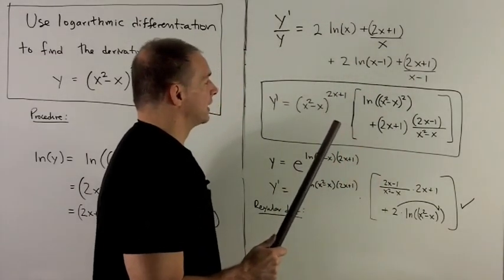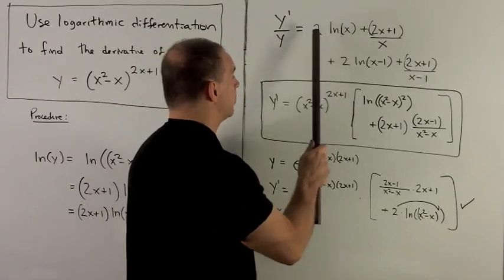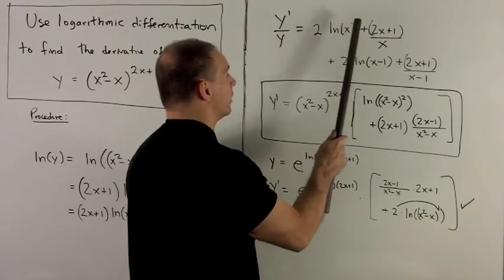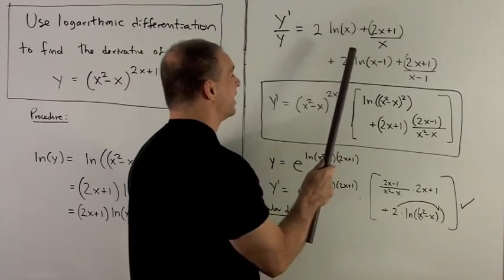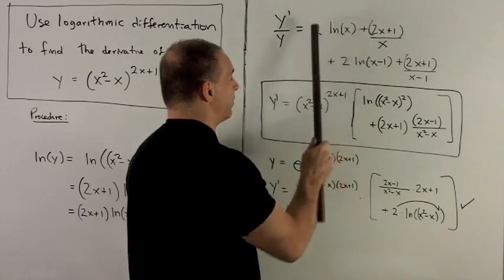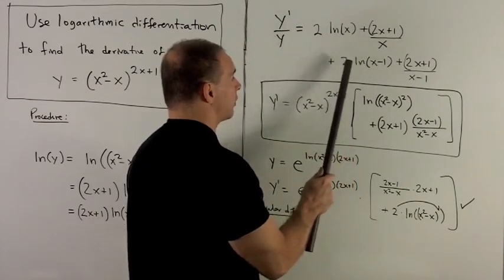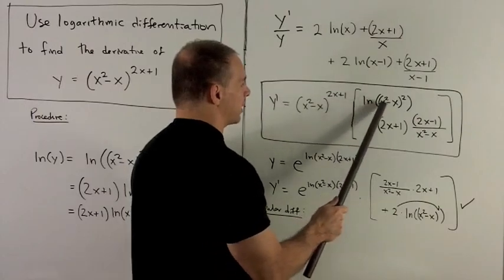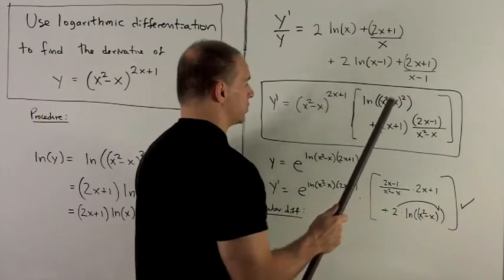Now note, we can start collecting terms. I could put the squares on the inside. These two in front become exponents on the inside, so that gives me x squared and x minus 1 squared. And then I can add these two natural logs together by multiplying on the inside. That's going to turn into natural log of x squared minus x quantity squared.